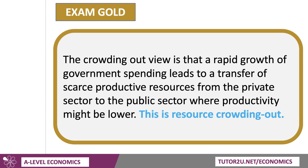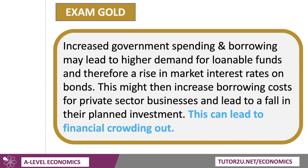The government increases its employment, and that might take away people who might have been working in the private sector. There's also something called financial crowding out — that's what we're going to focus on in this video. Financial crowding out is where the government spends more, borrows more perhaps, and that leads to an increased demand for loanable funds. Loanable funds are those funds available in financial markets for agents to borrow — for example, a mortgage or a small business loan.